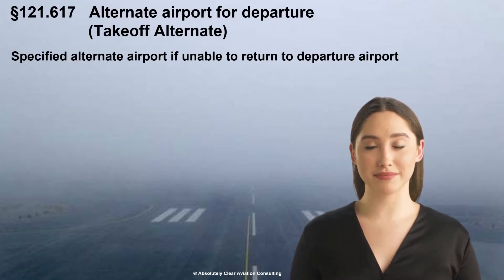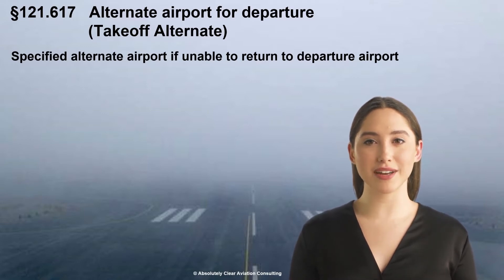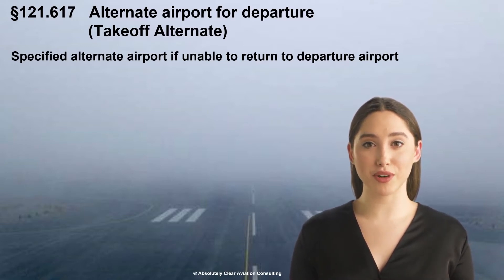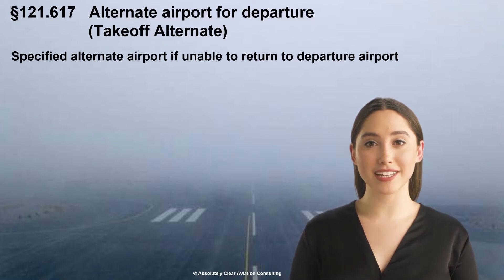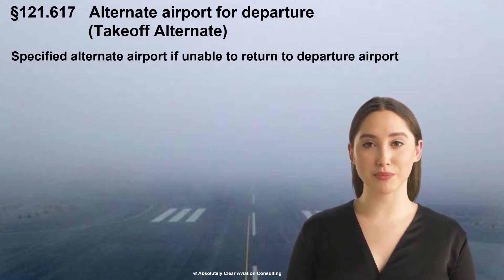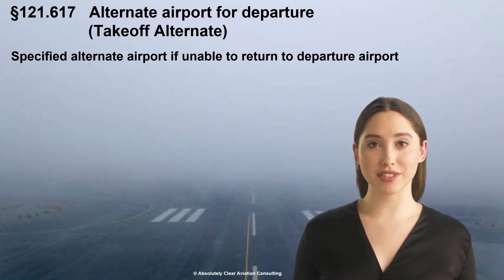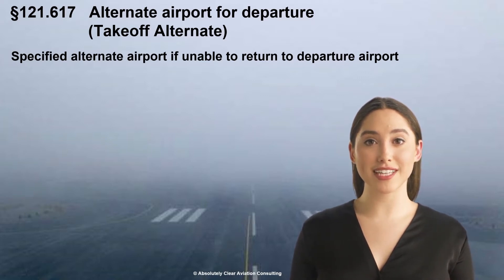Hi, I'm Jennifer. This lesson covers the FAA Part 121 regulation regarding an alternate airport for departure, also known as a takeoff alternate. A takeoff alternate refers to an airport which could be used should a need to land soon after takeoff arise, such as an in-flight emergency or as a precautionary measure.